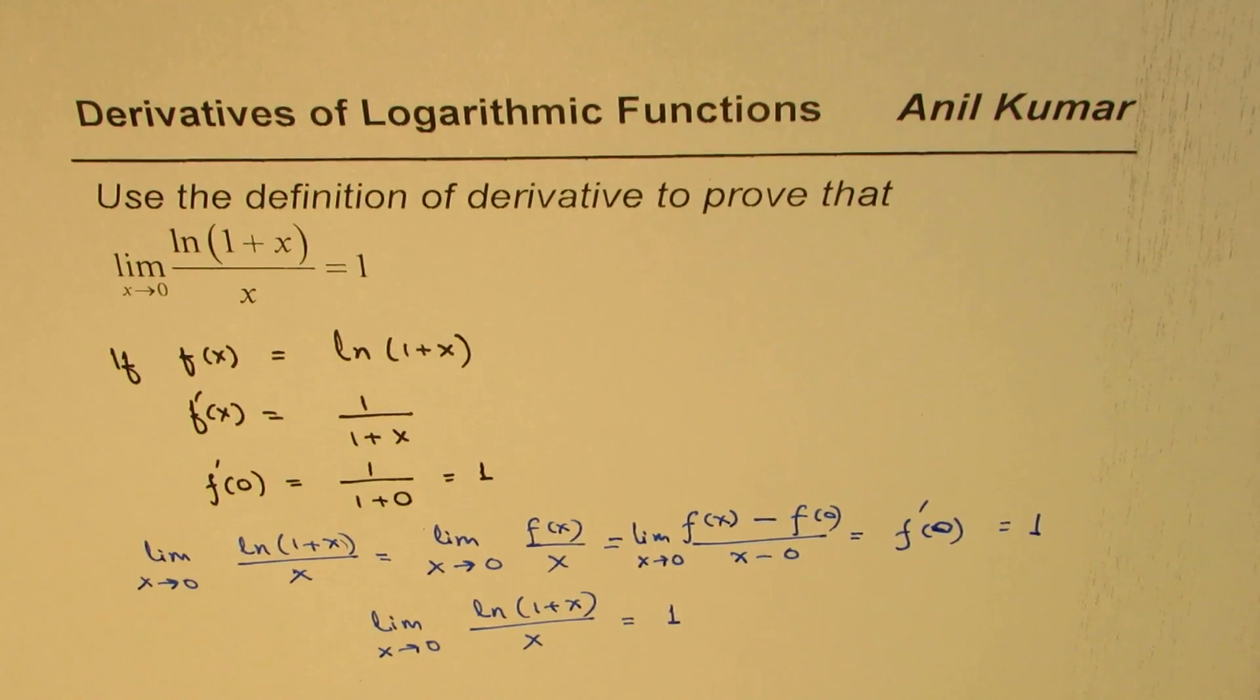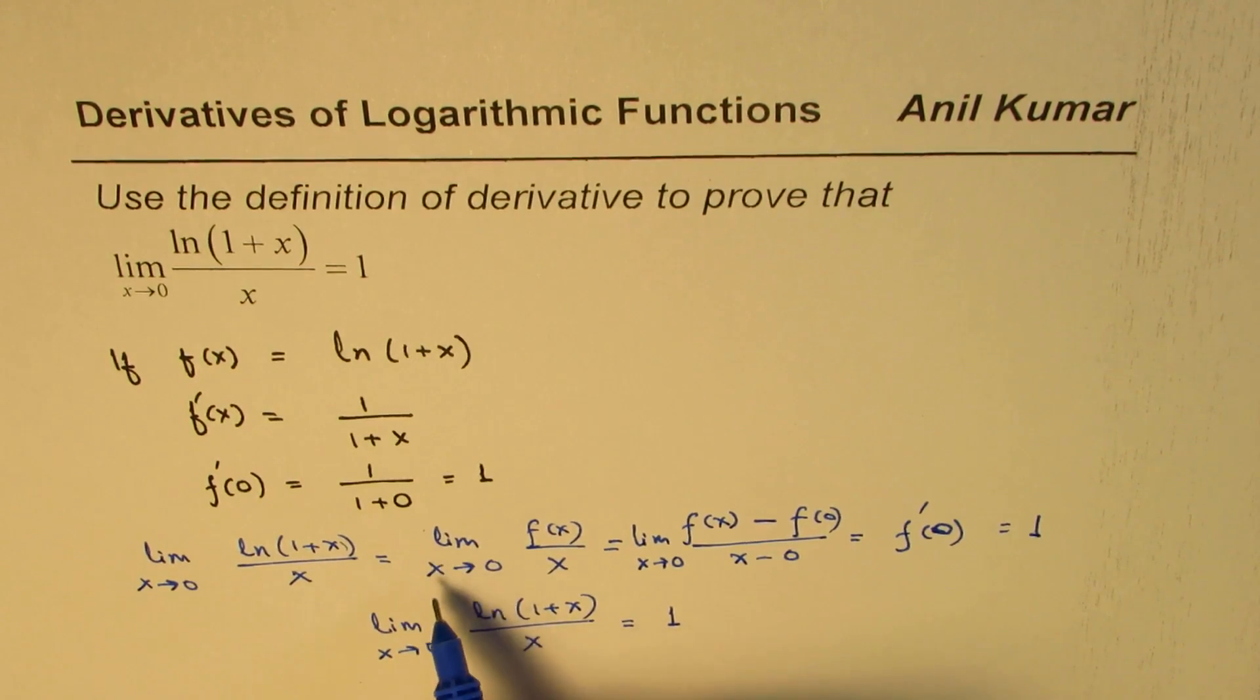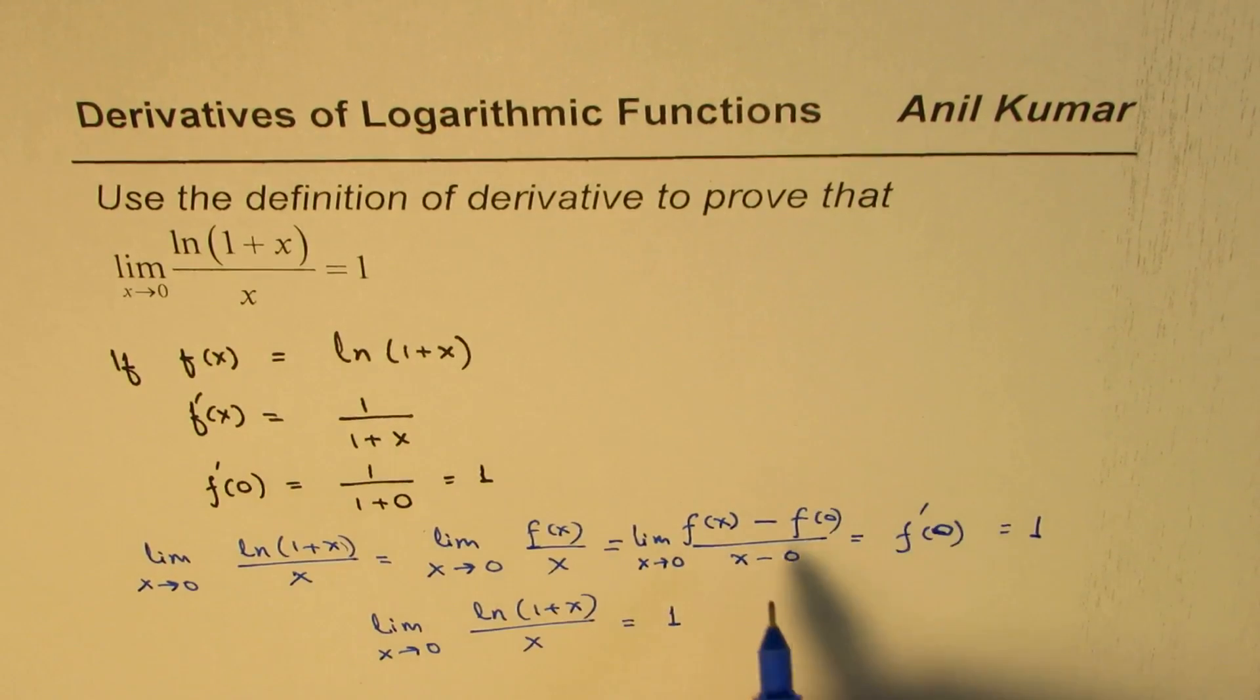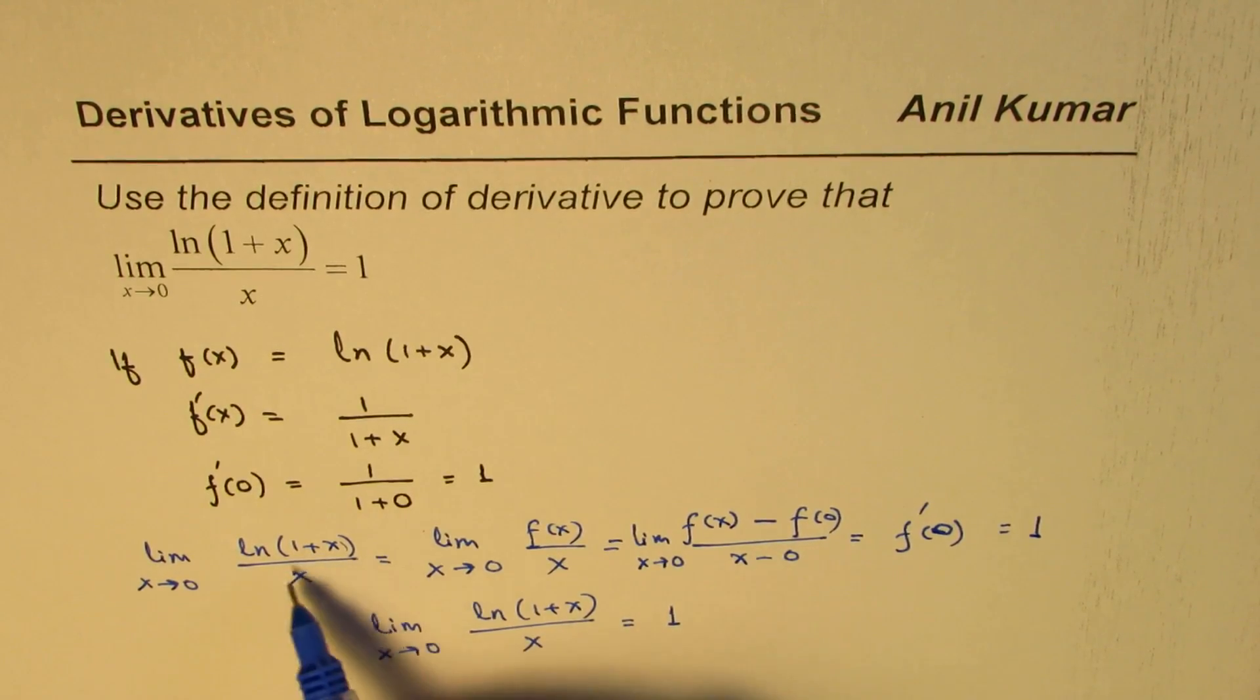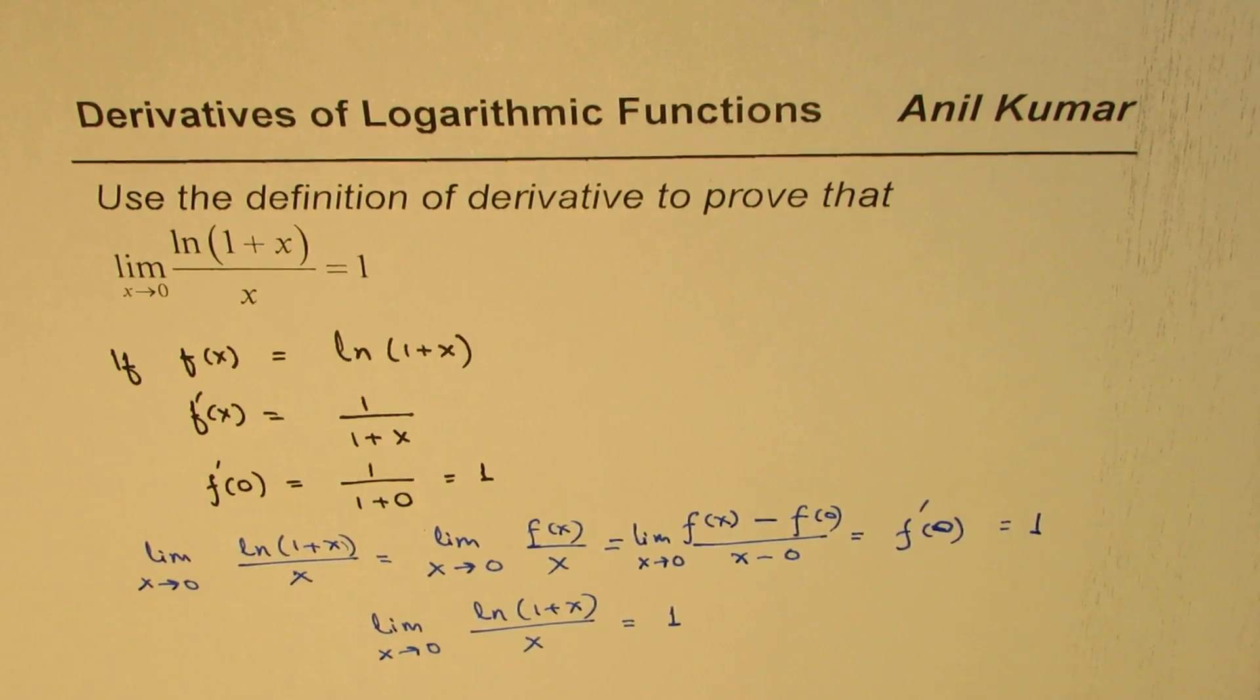So what we did here was that from the definition of the limits and combining the derivative, the derivative basic definition is kind of rate of change when x approaches 0. So f(x) minus 0 over x minus 0, that is the derivative definition. Now this, since we found as equals to 1, we can say that the limit of this function is actually 1. So that is how we can prove it.